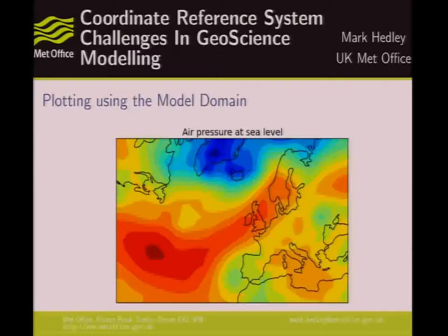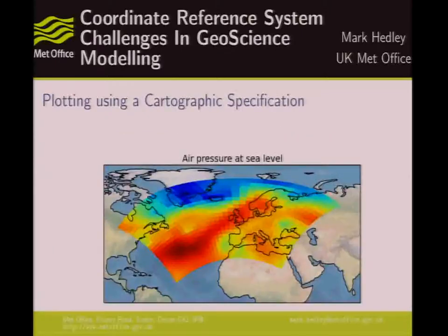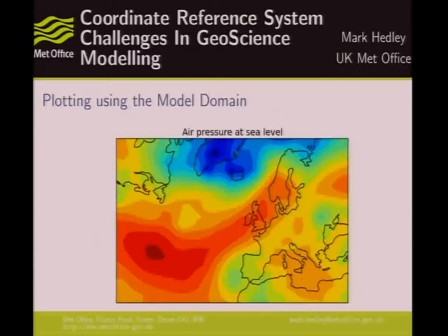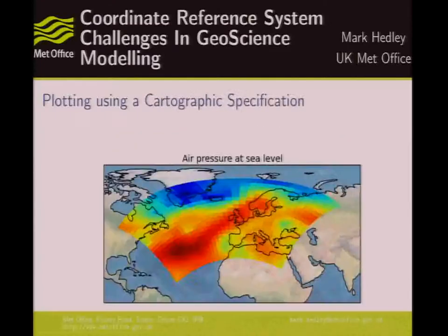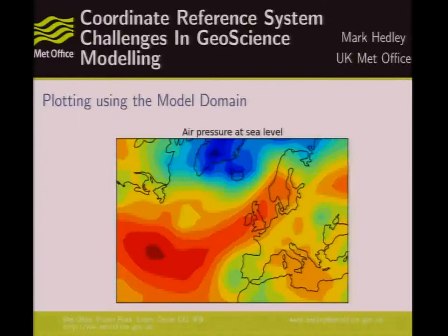This is taking the world the other way around — in this example we're looking at the world on a Plate Carrée projection and then drawing the model data over the top of it. This is looking at the model domain and then plotting the coastlines relative to the model space. These two are exactly the same data, just flipping the point of reference around.